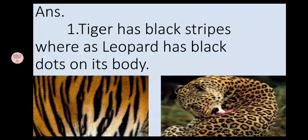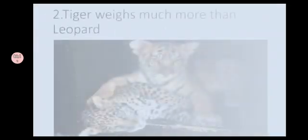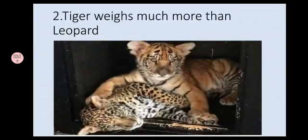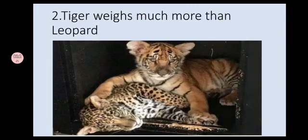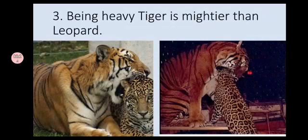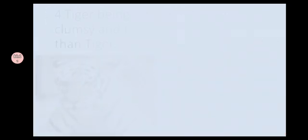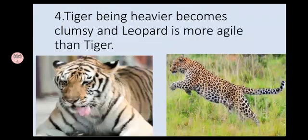The second difference is that a tiger weighs much more than a leopard. The third difference is that being heavy, a tiger is mightier than a leopard — but this has a drawback too, as a tiger being heavier becomes clumsy. So a leopard can run faster than a tiger; hence a leopard is more agile than a tiger.